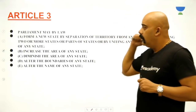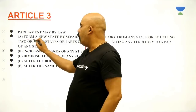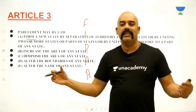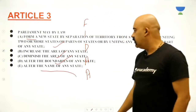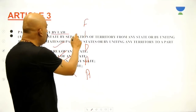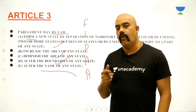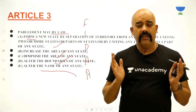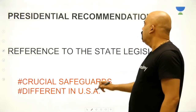Article 3 is very important — remember it well. Parliament may by law: form a new state by separation of territory from any state, or by uniting two or more states or parts thereof, or by uniting any territory to part of a state. In any permutation or combination, Parliament can form a new state, increase the area of any state, diminish the area of any state, alter the boundaries of any state, or alter the name of any state.